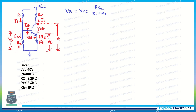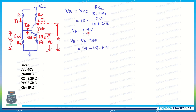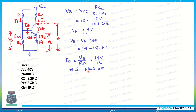Putting in the values, we get VB equal to 1.8 V. This is the bias voltage. Now let us calculate VE: VE equals VB minus VBE. Taking VBE as 0.7 V and VB as 1.8 V, we get VE equal to 1.1 V. Now we calculate IE as VE divided by RE: 1.1 V divided by 1 kΩ gives an emitter current IE of 1.1 mA.